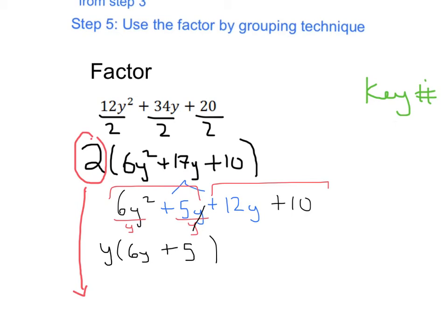Now in the second two terms, I've got a 12y and a 10. What's the biggest number I can take out of both of those? It would be a factor of 2.